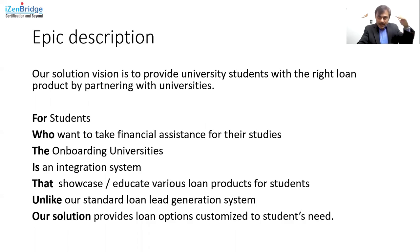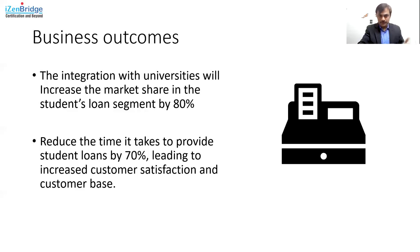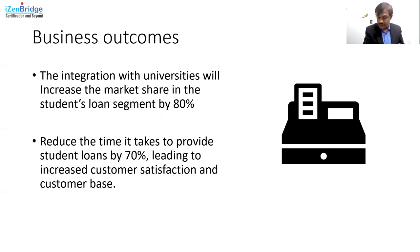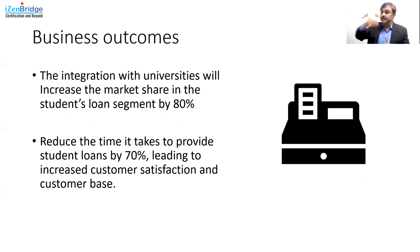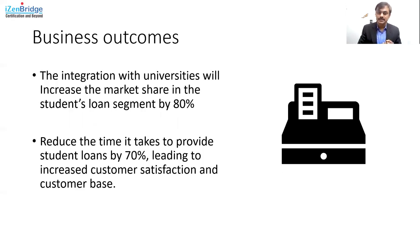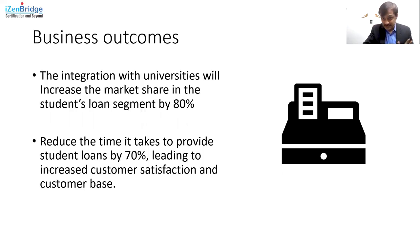Focusing on the EPIC hypothesis template, after the EPIC description we need to talk about business outcomes. Here are some examples for our case study. The integration with universities will increase market share in the student loan segment by 80%. The number of students coming from a particular university to the bank will increase by 80% through this integration. It will also reduce the time it takes to provide student loans by 70%, leading to increased customer satisfaction and customer base. We are acquiring students directly from the universities — that's the whole idea of the business outcome.